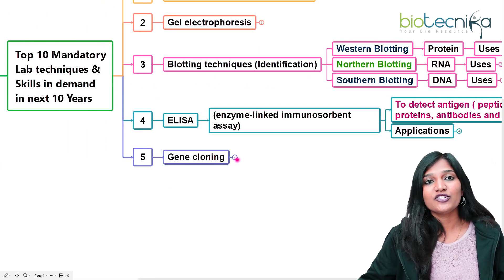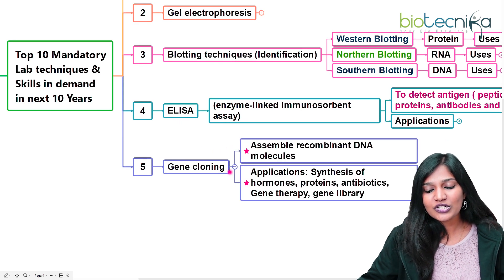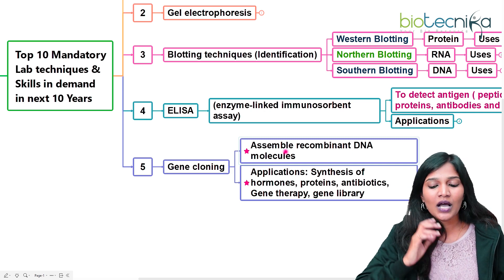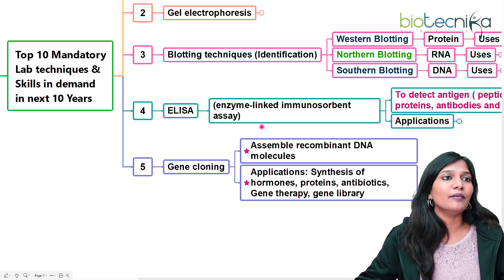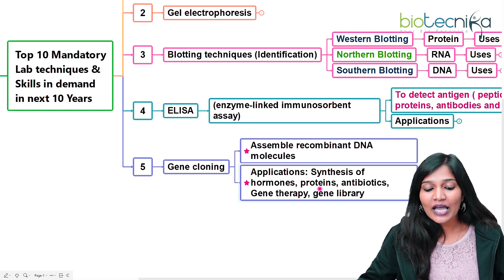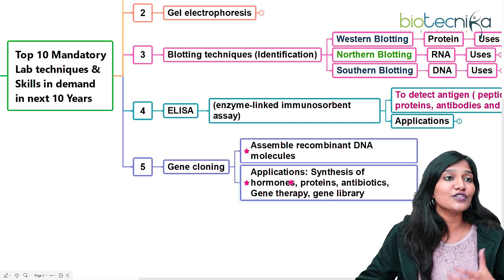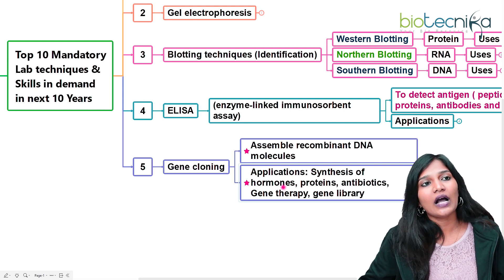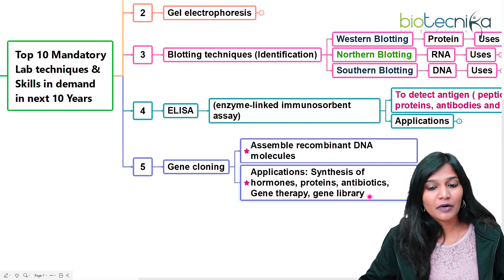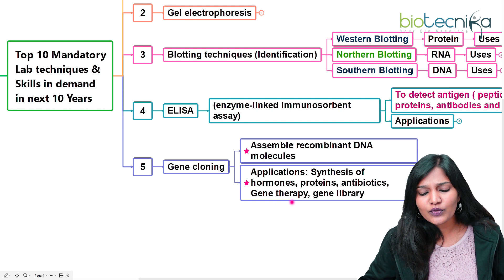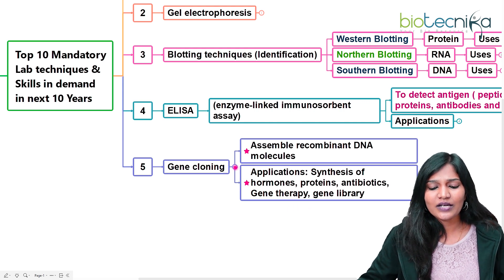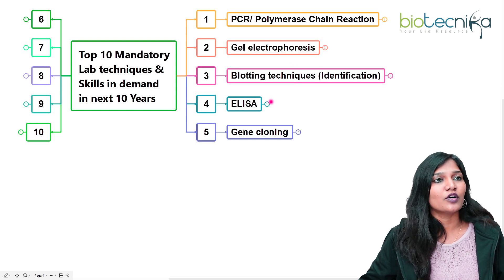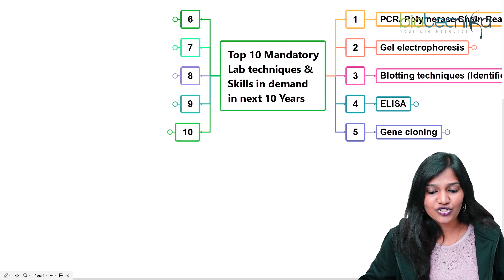The fifth technique is gene cloning, which is mainly responsible for assembling recombinant DNA molecules. With the help of gene cloning and recombinant DNA technology, we can produce hormones, proteins, and antibiotics. It is also useful in gene therapy and building gene libraries.